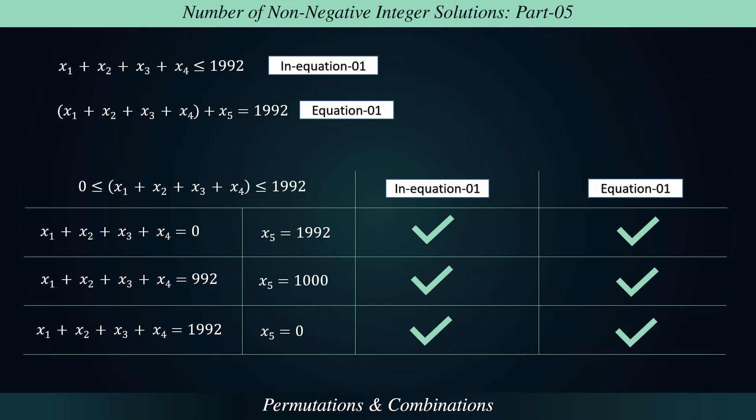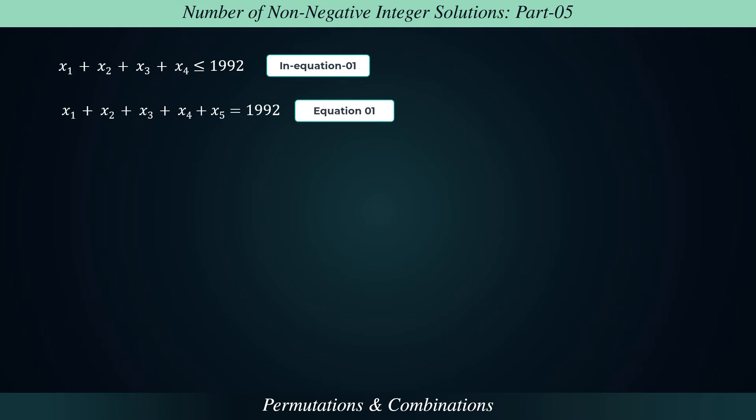You can make some more cases, but make sure that the sum of x1 to x5 does not exceed 1,992. Now you got the idea behind it. Adding x5 to the left-hand side of in-equation 1 makes it easier to solve the problem without affecting the number of solutions. By doing it, we have transformed the difficult problem into an easier one.